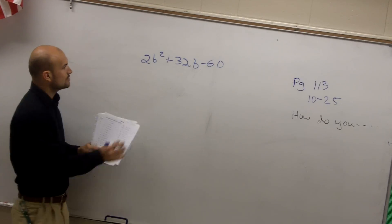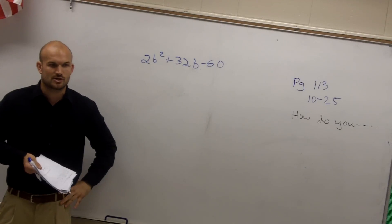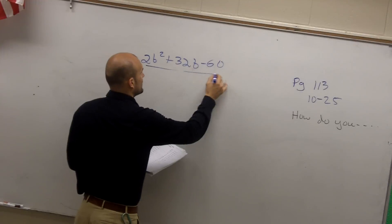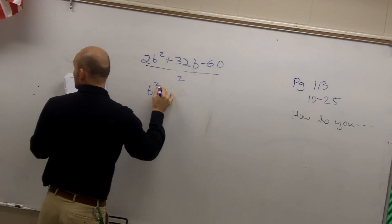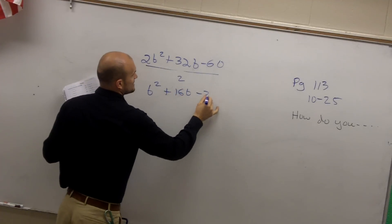So when you guys look at this, Tamisha, is there a number I can factor out or divide out of all three of those terms? Two. So let's divide out by two. Therefore, I'm left with b squared plus 16b minus 30.